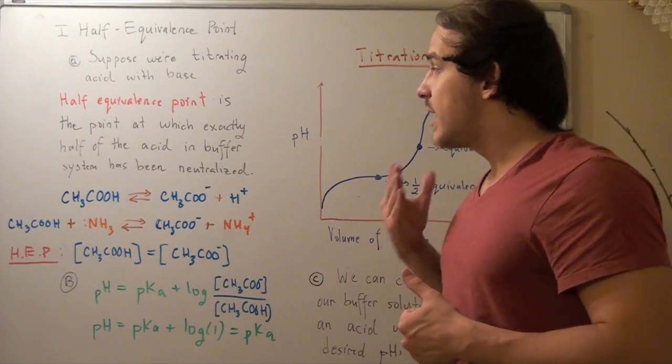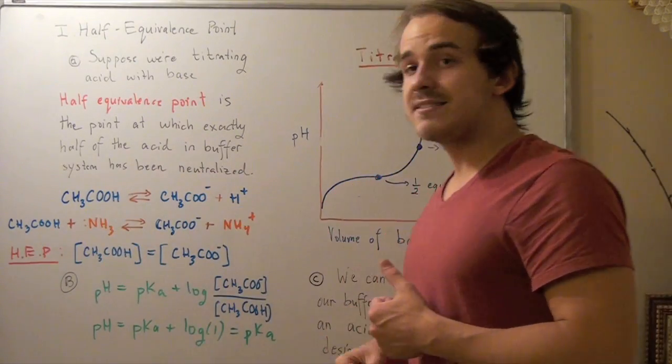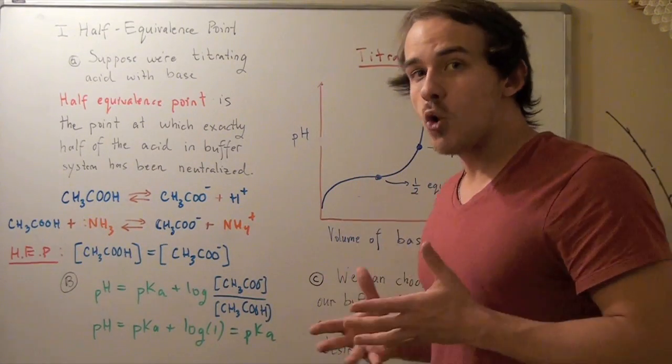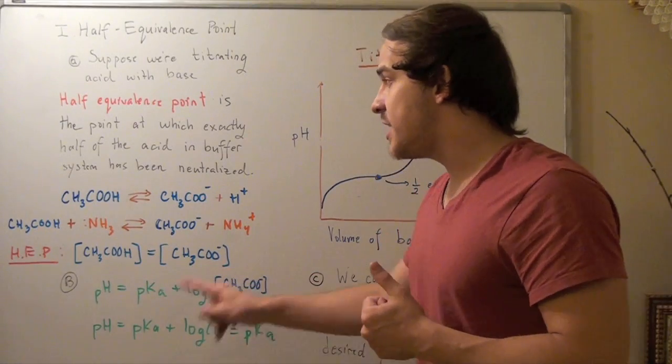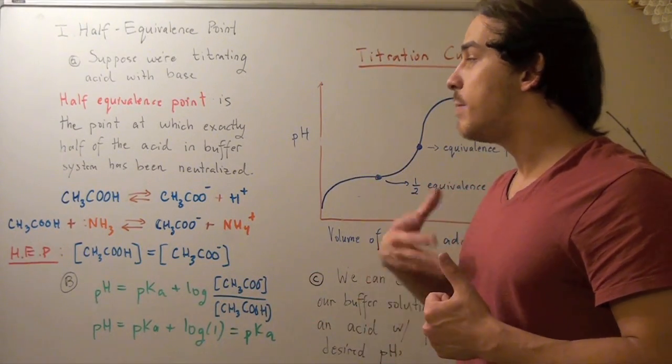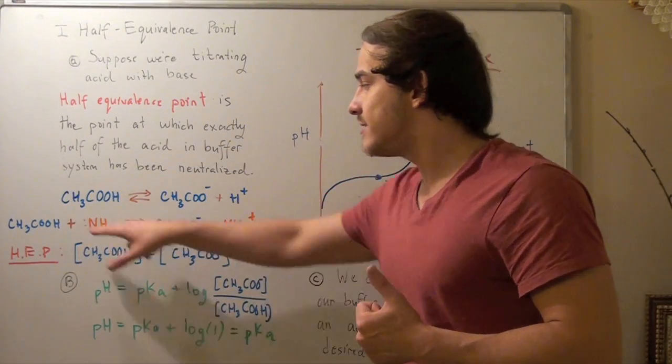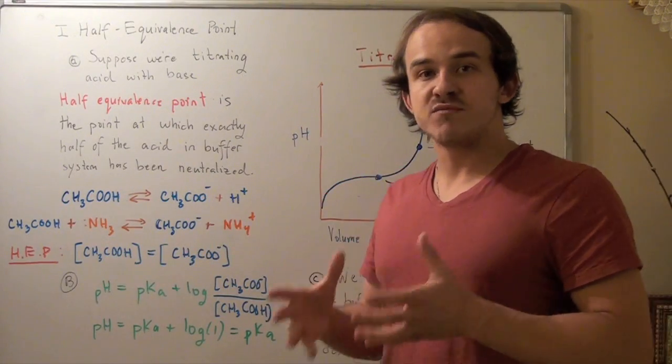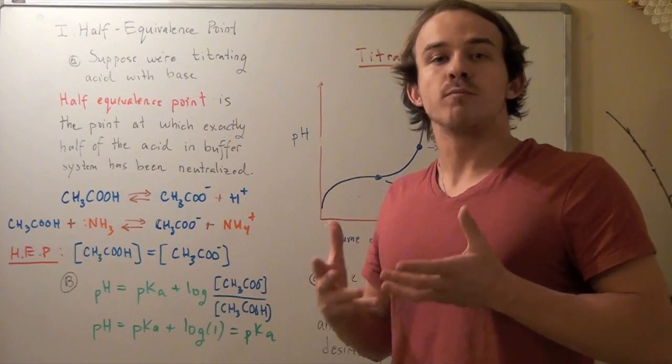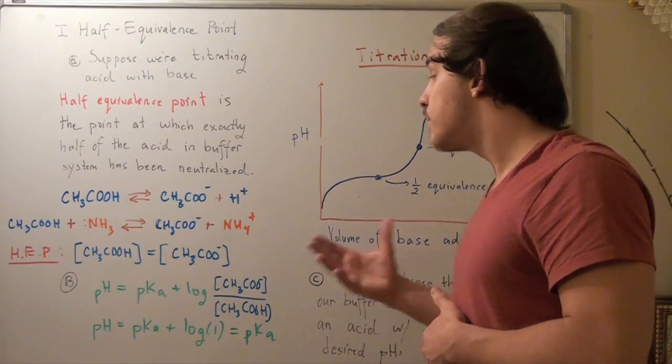So now I know, using this equation here, that if I choose my buffer system to consist of acetic acid, my pH of my buffer system will be 4.7. And that's important.